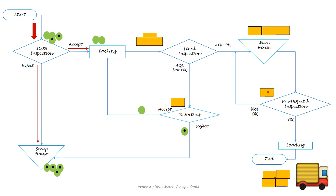After packing, boxes are collected for final inspection. At final inspection, if the acceptance quality level (AQL) is found OK, then the lot is forwarded to the warehouse. And if AQL is not found OK, then the lot is sent for resorting.